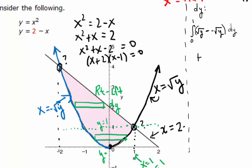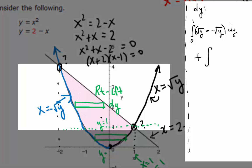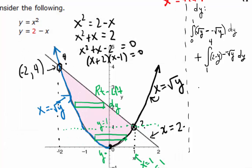Then we add to that the integral from what to what? This is a dy integral, so our bounds have to be y values. It looks like it goes from 1 up. We know the x coordinate there is negative 2, so plugging in, the y coordinate must be 4. So it goes from 1 to 4. Right minus left: the right side is the line, 2 minus y, and we subtract from that the negative square root of y. I hope you found this video useful — if you did, please remember to like it.